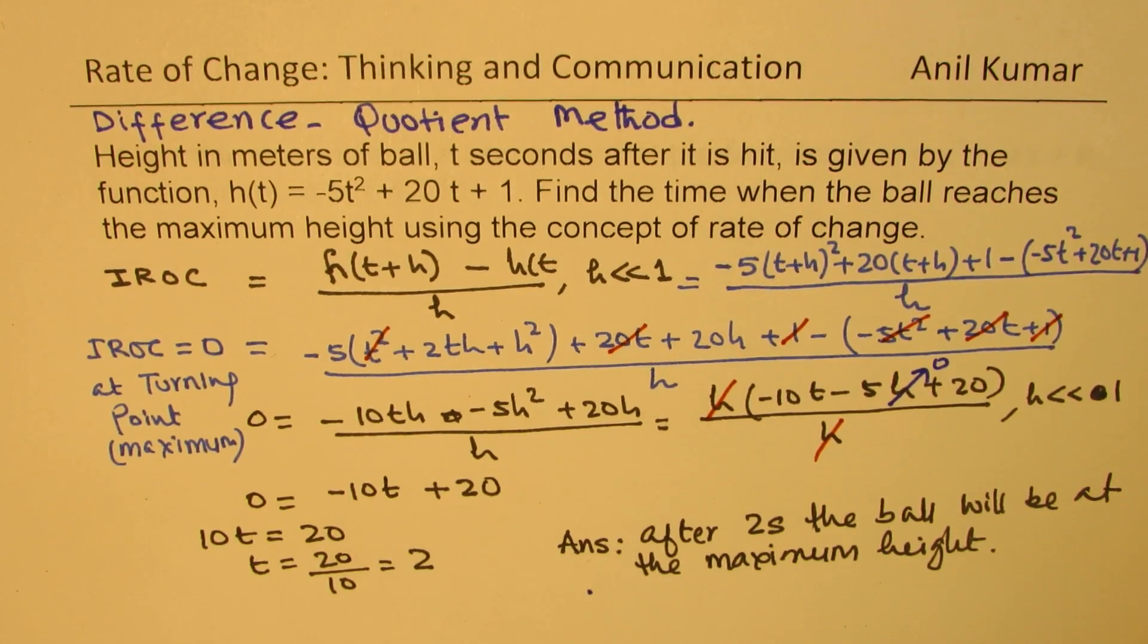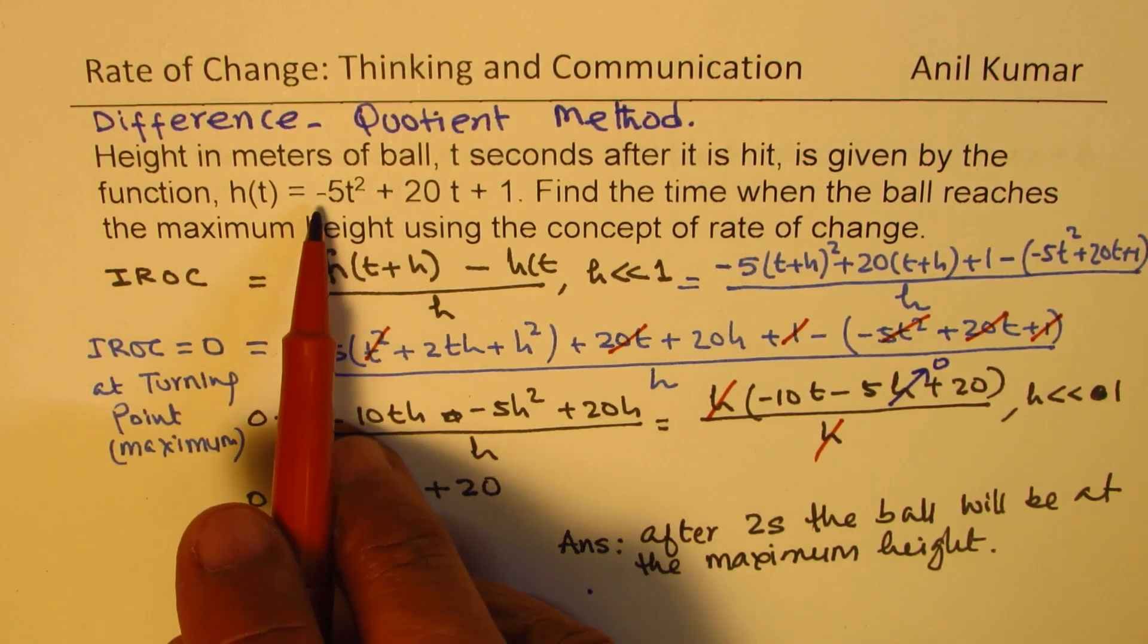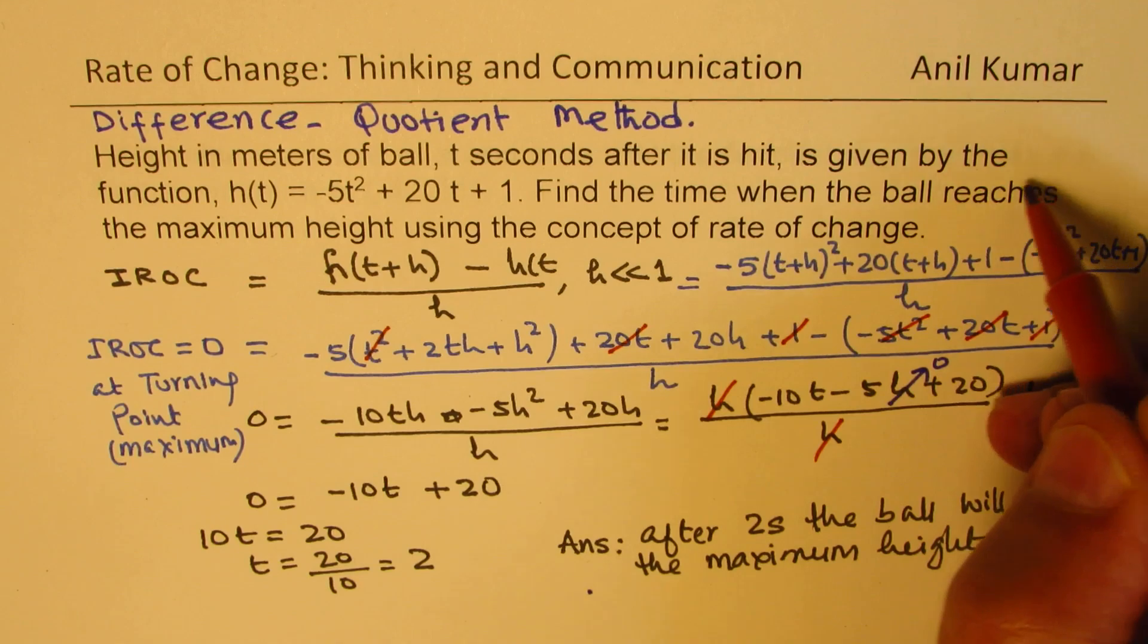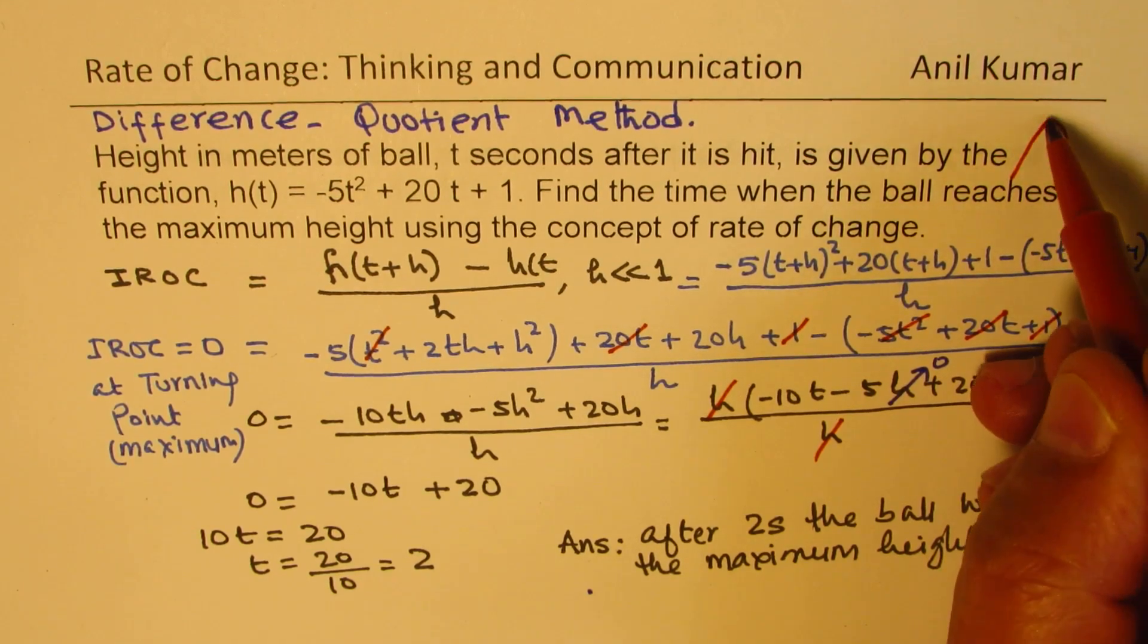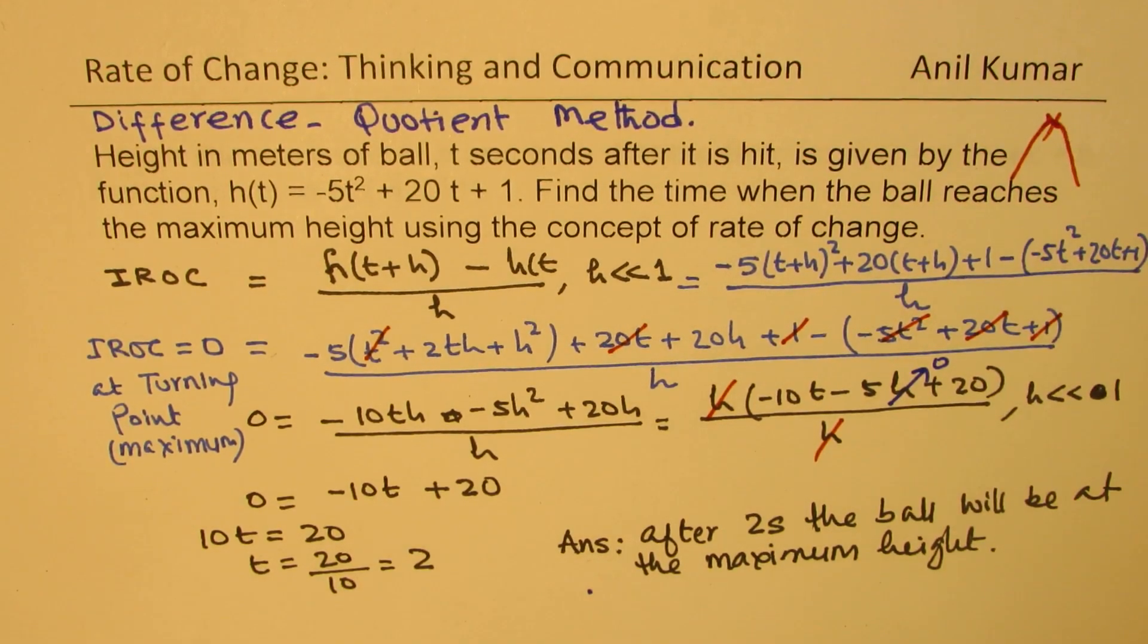And this turning point could be a maximum or a minimum, right? So in this case, since the parabola leading coefficient is negative, we know it's a curve which is kind of like this, and so we are heading for a maximum. Perfect.